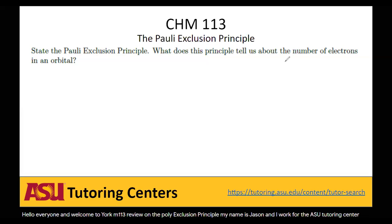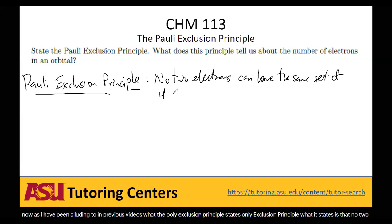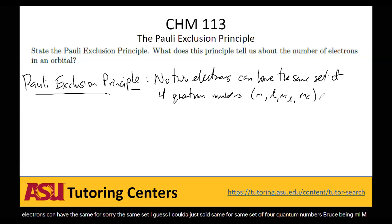As I have been alluding to in previous videos, what the Pauli Exclusion Principle states is that no two electrons can have the same set of four quantum numbers — those numbers being n, l, M sub L, and M sub S. Essentially, once you have all the quantum numbers for an electron, you have uniquely identified that electron.